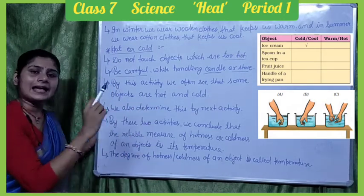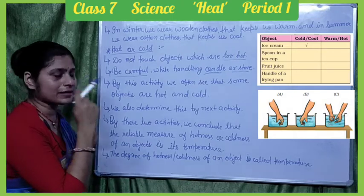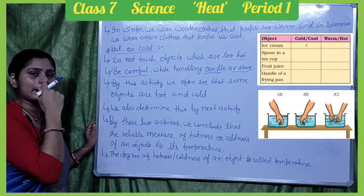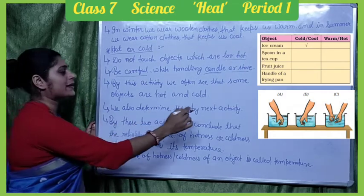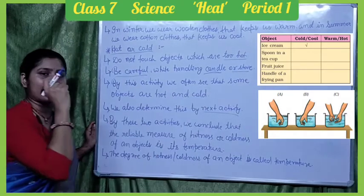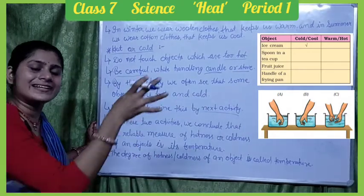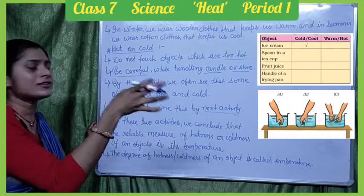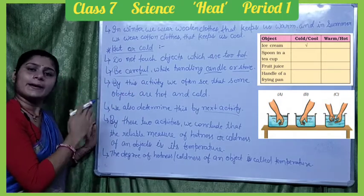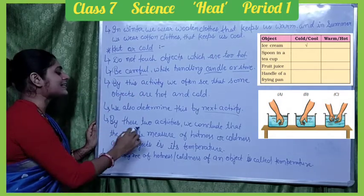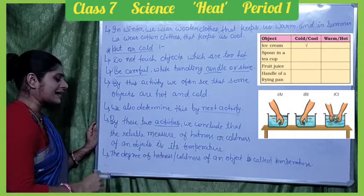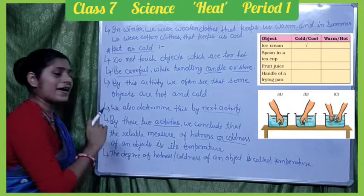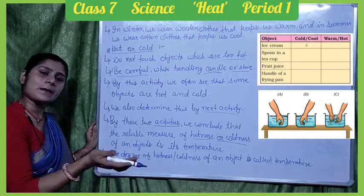By activity 1, we often see that some objects are hot and some are cold. In the second activity, we determined the feeling of warm and cold water. We conclude that the reliable measure of hotness or coldness of any object is its temperature.